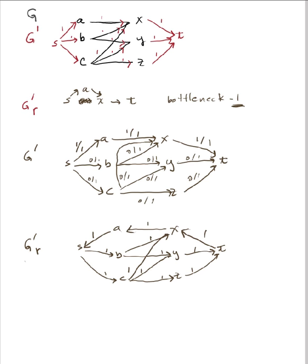We need an augmenting path here. I can't choose SA. I could choose SB, but I can't choose X next because I don't get to T that way. But I could choose S, B, Y, and T. The bottleneck for that is 1. So I go back to my original graph and update my flows: S to B, flow of 1 out of capacity of 1. B to Y, 0 plus 1 gives a flow of 1 over capacity of 1. Y to T, 0 plus 1 gives a 1 over capacity of 1.